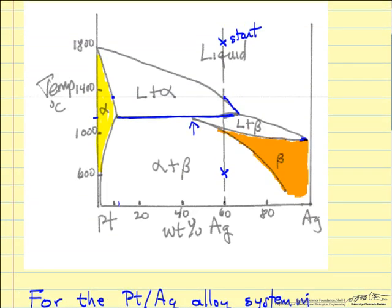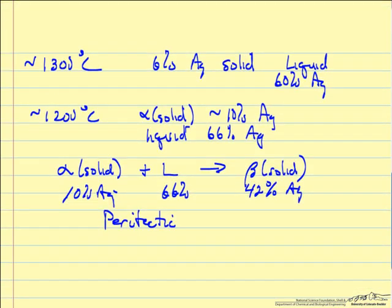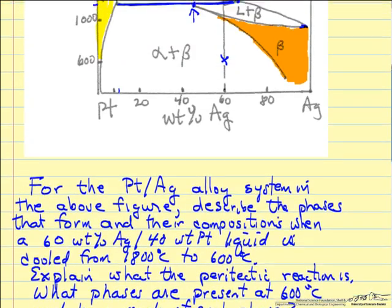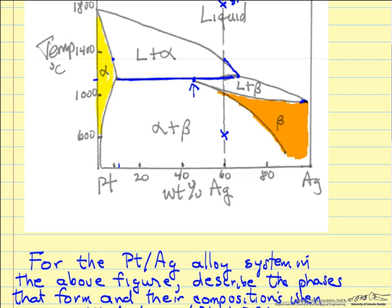We are going to make beta solid, using up the alpha phase to make beta phase, and we remain at this temperature until all the alpha phase is gone. Then we have just this beta phase in equilibrium with liquid. Eventually, still at approximately 1200°C, we just have the liquid plus the beta solid at the same composition. Now as we continue to cool, we get into the liquid plus beta phase region.